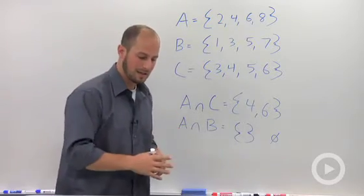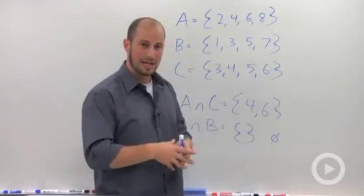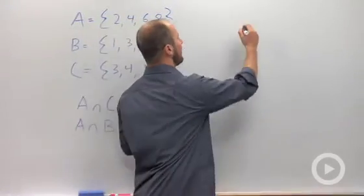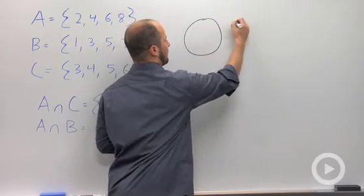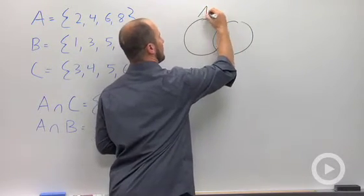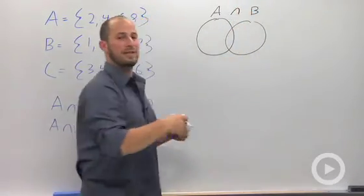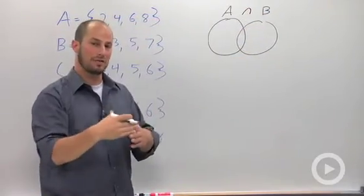Another way your teacher may describe intersection is with the Venn diagram. So say we have two sets of data, A and B. The intersection is what these two share, so where these two actually overlap.